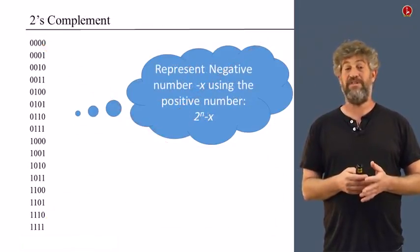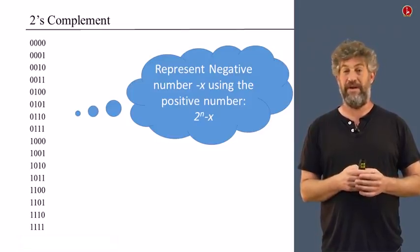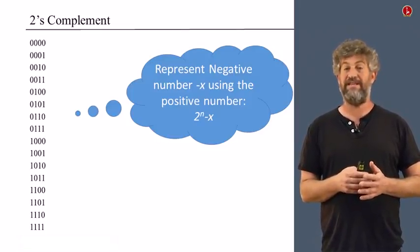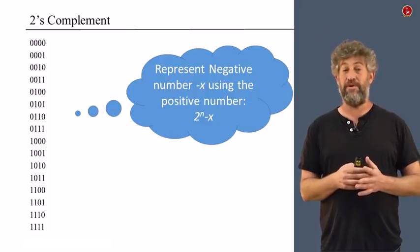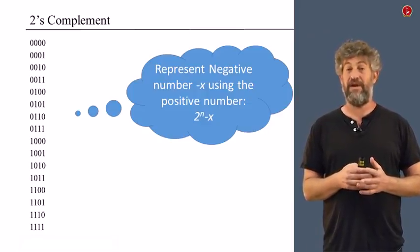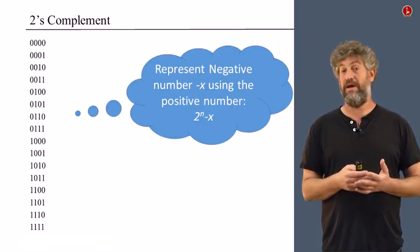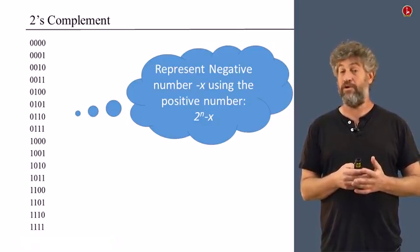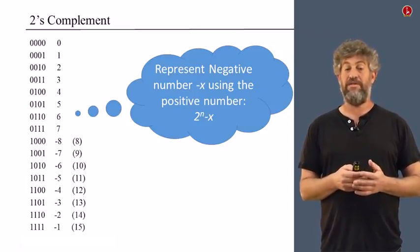Here is what people use instead. They use a system called two's complement and it has a very simple idea. If you want to represent a negative number, negative x, you represent the positive number 2 to the n minus x. In our case of 4 bits, 16 minus x, which is going to be a positive number and you're going to represent it like we've seen so far.